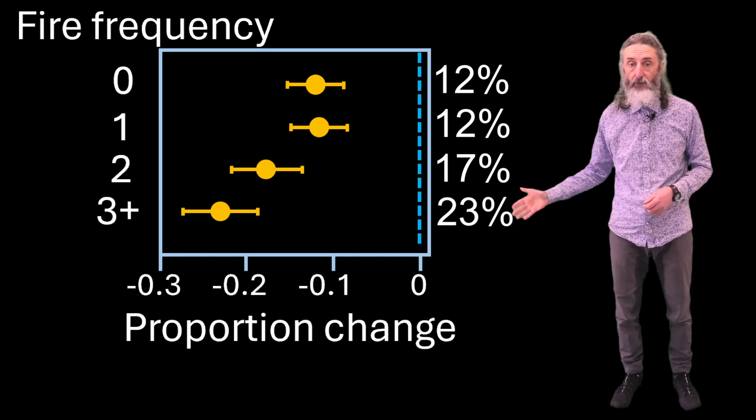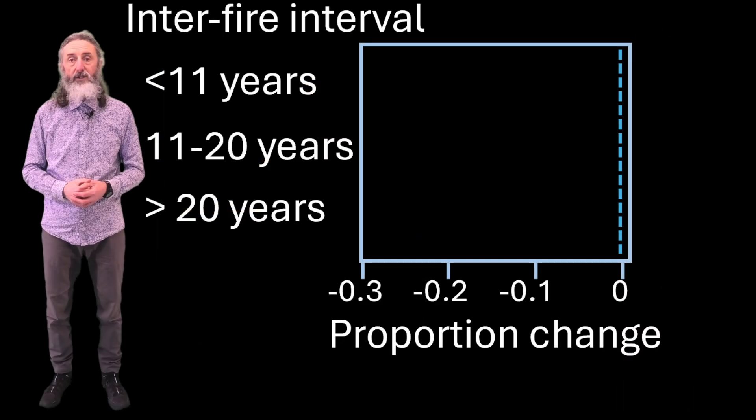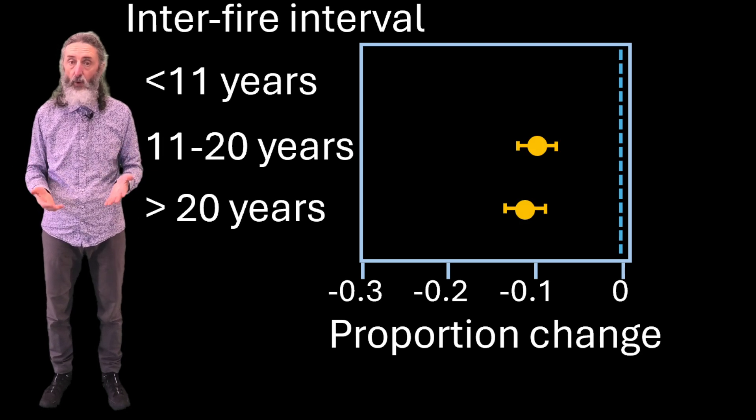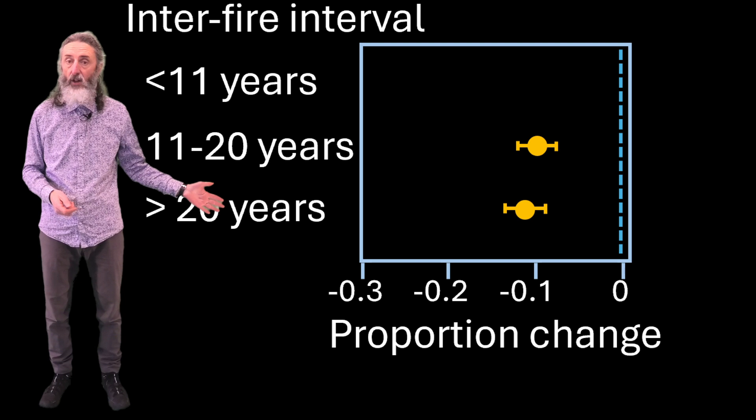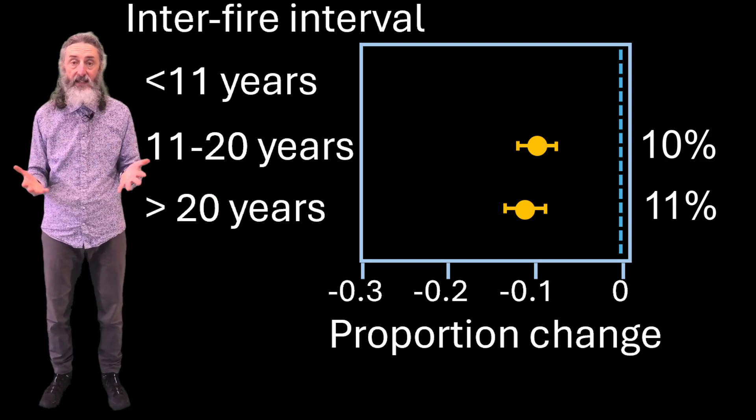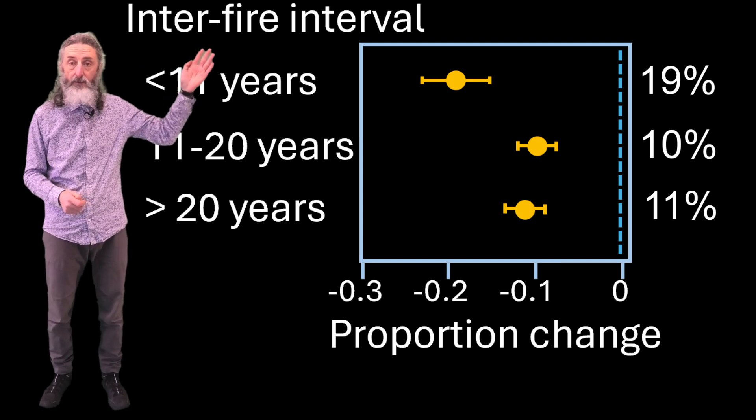We saw similar declines with the time since the last fire. If a site was burnt more than 10 years ago, the average decline was 10 or 11%. But if the site had burnt recently in the past 10 years, the decline was almost twice as big.